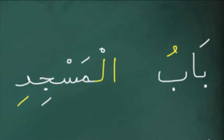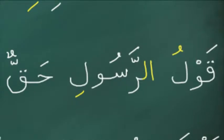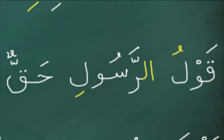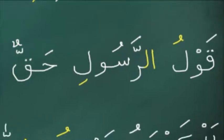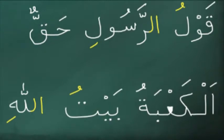In the first example, babul masjidi, the word al-masjid is acting as al-mudaf ilayhi — the possessor — and as mentioned, al-mudaf ilayhi can take 'al' at the beginning and the noun becomes majroor, ending in a kasra. In the second example, qawlul rasuli haqqun, the word qawl is al-mudaf — what's being possessed. Who owns the speech? Al-rasuli — the messenger. The word al-rasuli is al-mudaf ilayhi, beginning with 'al' and ending with a kasra, and is therefore majroor. In the last example, al-ka'batu baytullahi, the word Allah tabarak wa ta'ala begins with 'al' and ends with a kasra.